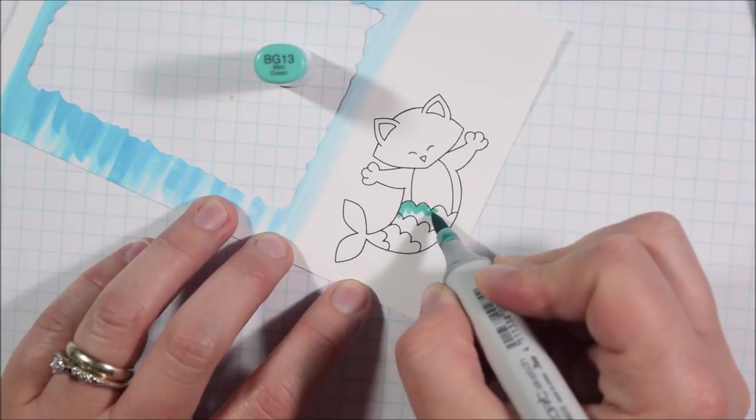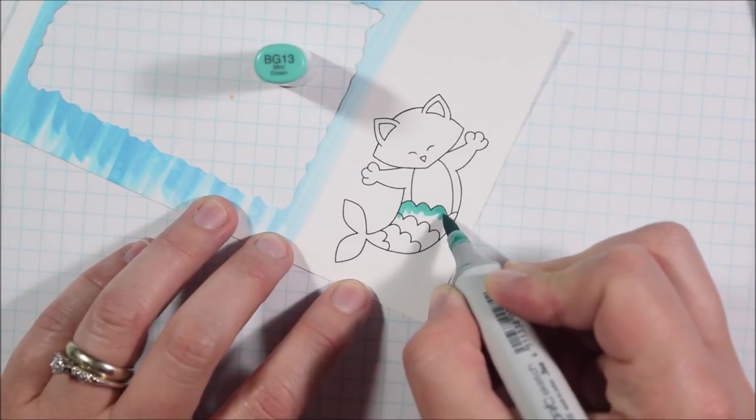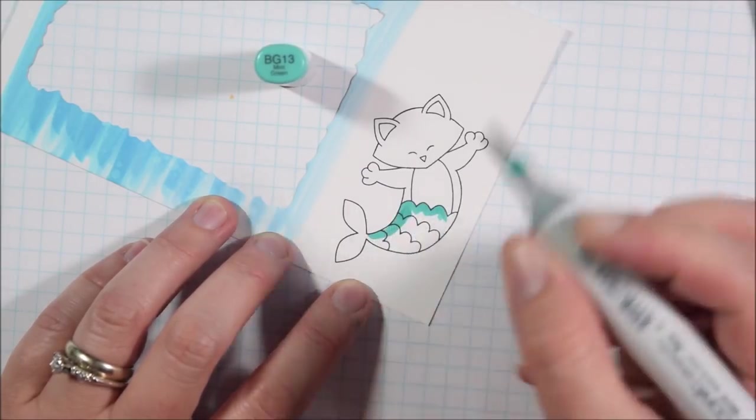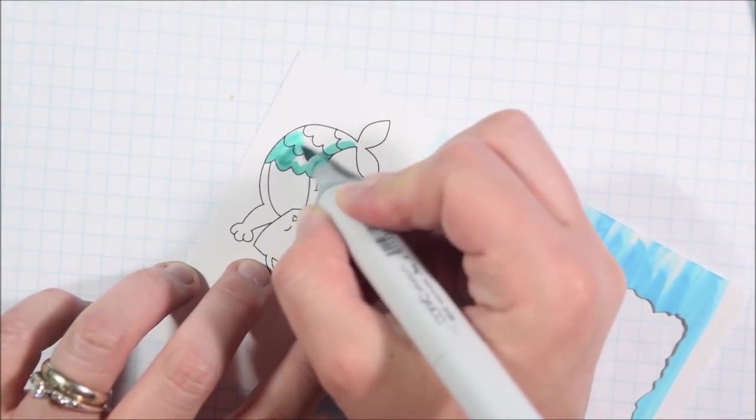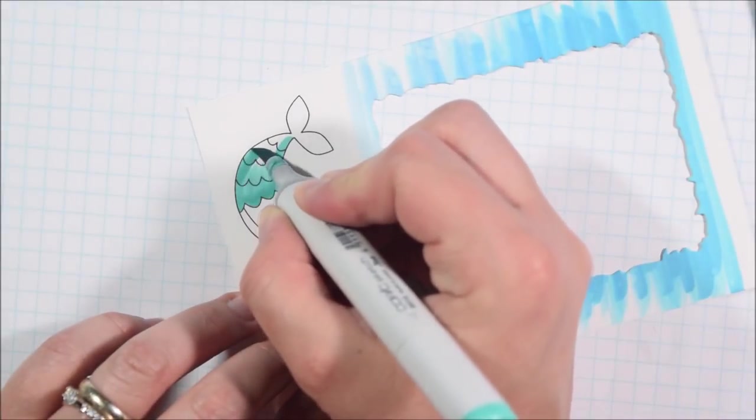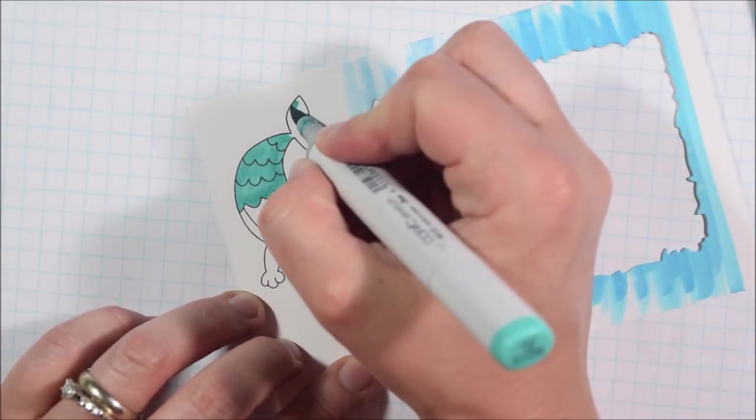If you were looking to go over it again with your Copics you could use colorless blender to create the same effect and going over colorless blender will never have a negative impact on your markers.